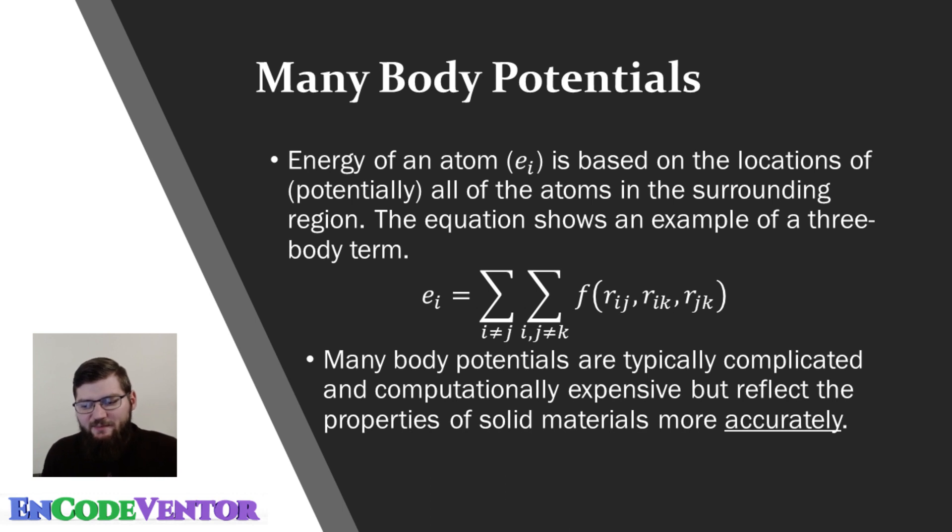Now, many body potentials are similar. Typically, it's a combination of a pair term and a many body term. But in this case, the energy of any Ith atom is based on the locations of all of the atoms in the surrounding region. So in one example, if you have a three body term, then you'd have a double summation where you have to take into account contributions of the pair energy that also take into account its pairs. So in other words, the energy for the Ith atom will depend on the location of a Jth atom and a K atom where the J and K can be all other atoms. So you have to look through all those different combinations.